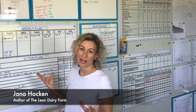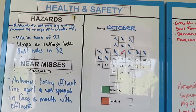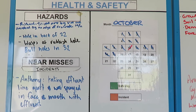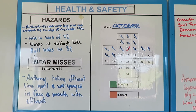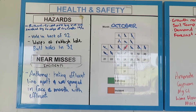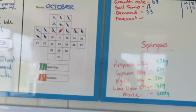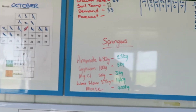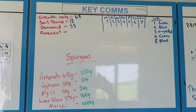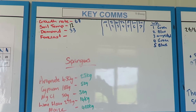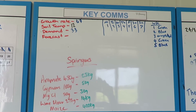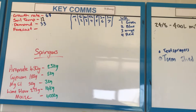So what do we have on our board? The first thing we've got is our health and safety, and we also use this thing called a safety cross. The next thing we've got here is key comms, and we use that for just any general type of communication that we want to do.